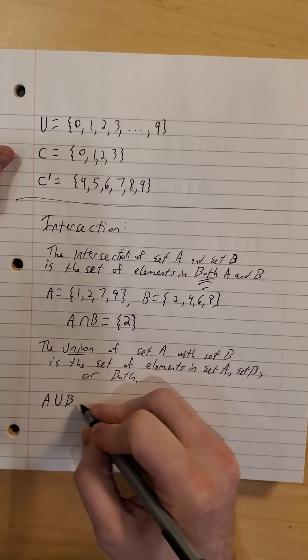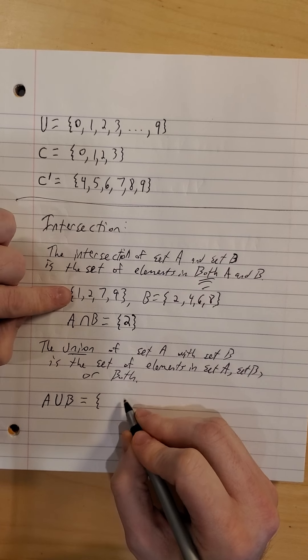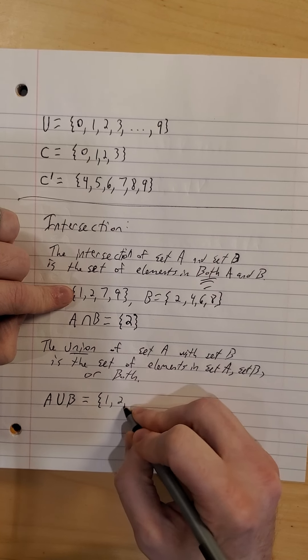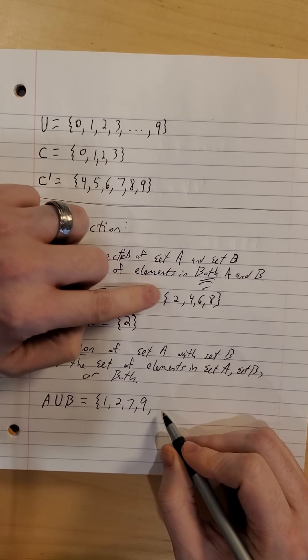So the union is a set of elements that are in set A, set B, or both. So for this one, A union B. So if it's in set A, I get to keep it. So I'll keep the 1, the 2, the 7, and the 9. If it's in set B, I'll keep it.